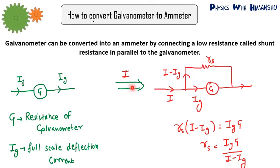What we'll do is we will connect a small resistance Rs in parallel with the galvanometer. Suppose the current I is coming, so Ig will go in galvanometer. We will choose the value of Rs such that Ig will go in the galvanometer and the remaining I minus Ig will go in the shunt resistance.